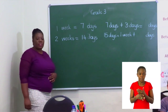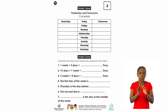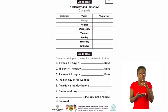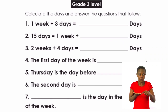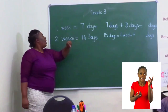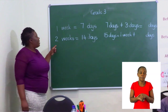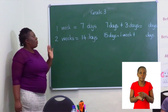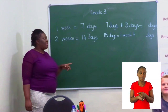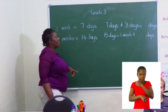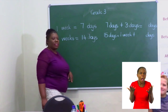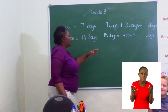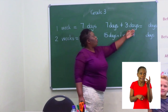Now grade 3s, your exercise is also on page 10. We are going to do days of the week. One week is equal to seven days — seven days make up one week. So if I have seven days plus three days, how many days am I going to get?